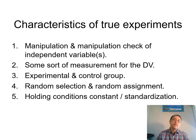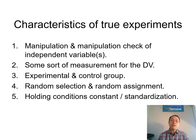So what are the characteristics of true experiments? The first thing you need is manipulation of the independent variable. The second thing is some sort of measurement for the dependent variable, and this needs to be operationalized. Then you need to have at least an experimental group and a control group in an independent groups design.